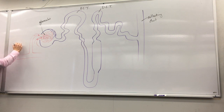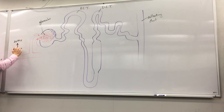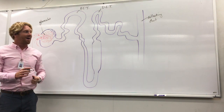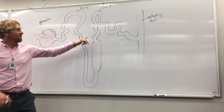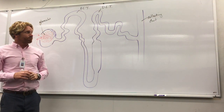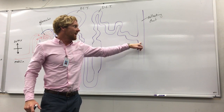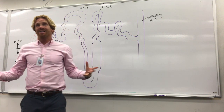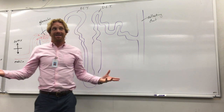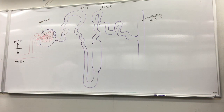After flowing through the proximal convoluted tubule, the fluid dives into the nephron loop, which goes down into the medulla. The division between the outer cortex and the medulla is right around here. After that, it comes back up through the distal convoluted tubule where more things are reabsorbed, and finally the urine reaches the collecting duct, which leads to the calyx, the pelvis, the ureter, and ultimately the bladder.